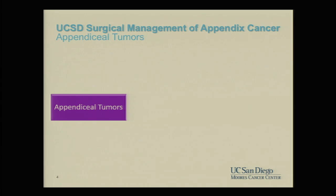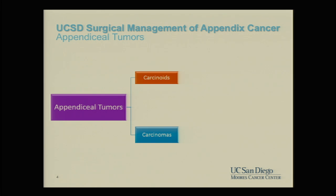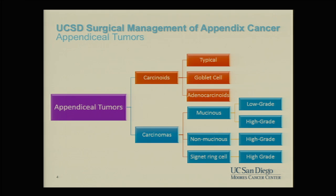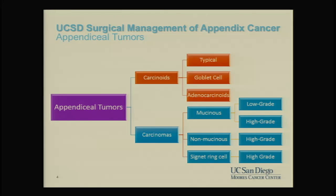This is a very simplistic view, but as I see it as a surgeon, the easiest demarcation in appendiceal tumors is between carcinoids and carcinomas. We're not talking about carcinoid tumors today. In terms of carcinomas, there are mucinous tumors, non-mucinous, and signet ring cell — which I classify as a different disease entity, although they are technically mucinous. As surgeons, we often divide these tumors into high-grade and low-grade, which helps with patient discussions and determining disease biology and prognosis.